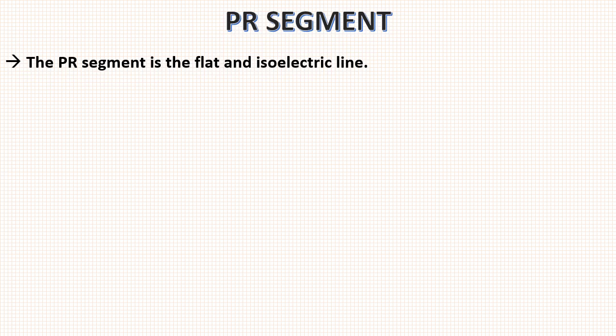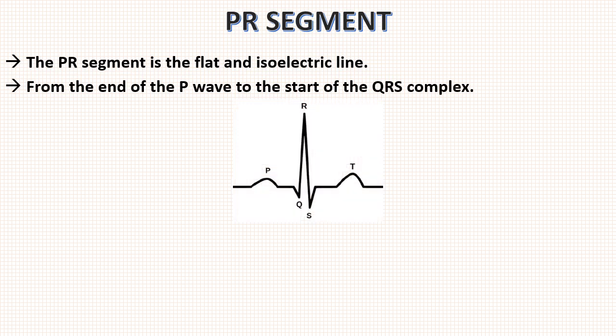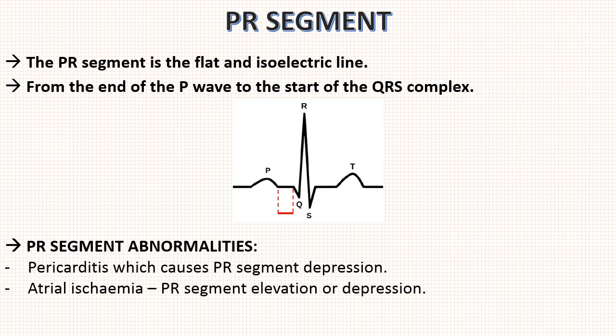Now coming to segments, first is PR segment. The PR segment is flat and usually isoelectric line. As we discussed segments do not contain any waves. It is measured from the end of P wave to the start of QRS complex. The PR segment abnormalities occur in two conditions. First is pericarditis which causes PR segment depression.